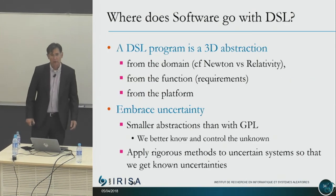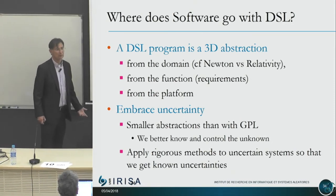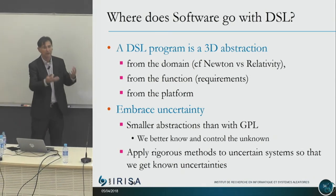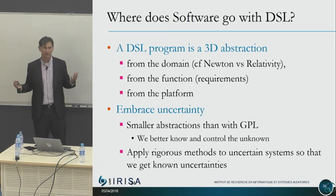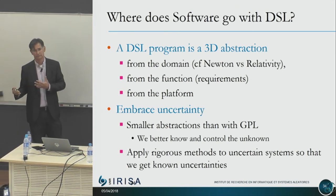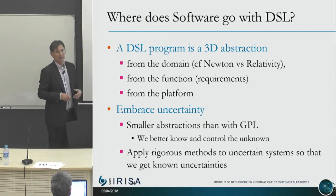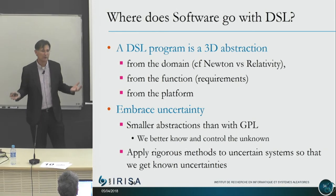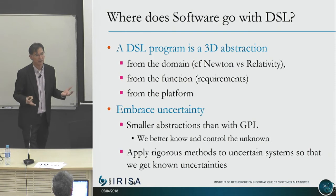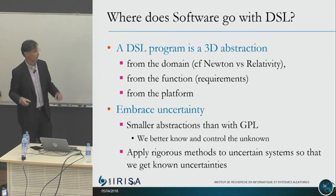Where does software go with DSLs? A DSL is a three-dimensional abstraction — an abstraction from the domain, representing domain knowledge. Because it is an abstraction, it's wrong. Like Newton's theory — it's not wrong, but it's a good approximation of physics up to a certain point. What you can express in a DSL is always a good approximation up to a certain point. Then you have an abstraction from the function and from the platform.